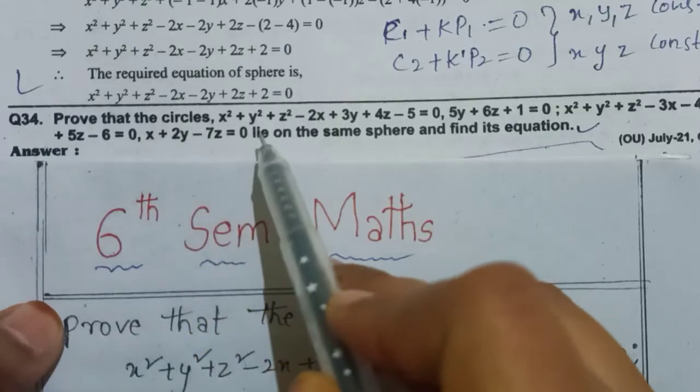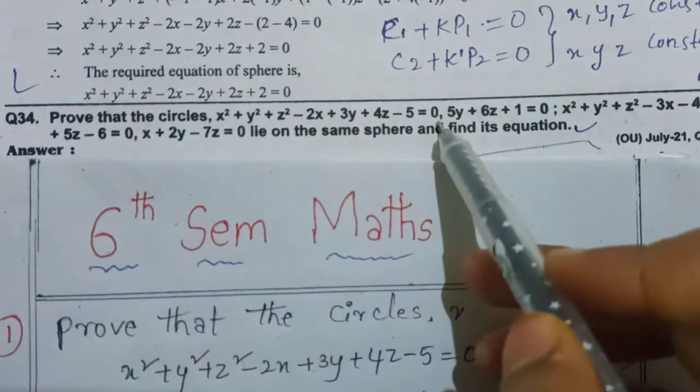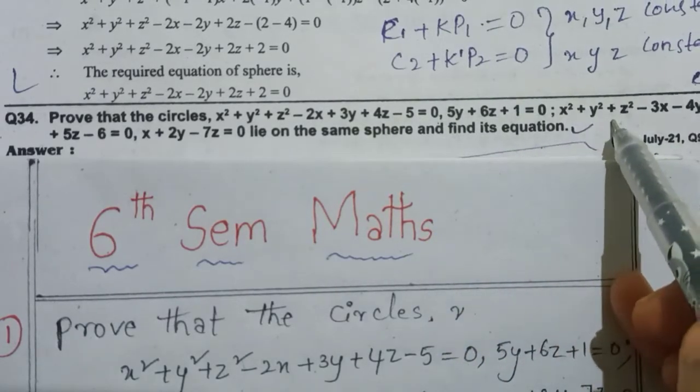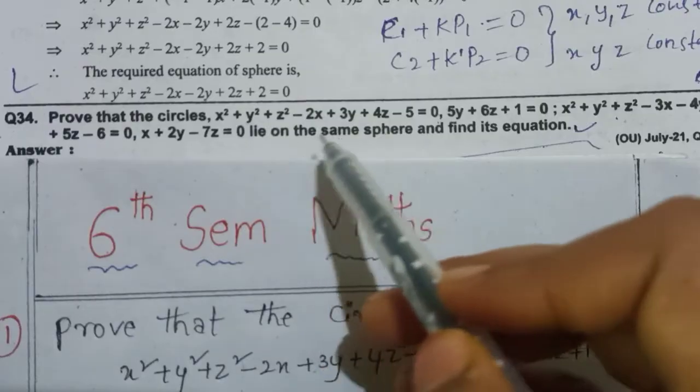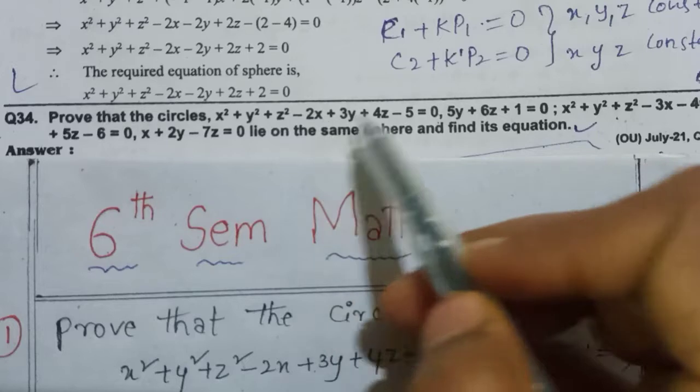Prove that the circles x²+y²+z²-2x+3y+4z-5=0, 5y+6z+1=0 and the second circle x²+y²+z²-3x-4y+5z-6=0, x+2y-7z=0 lie on the same sphere.